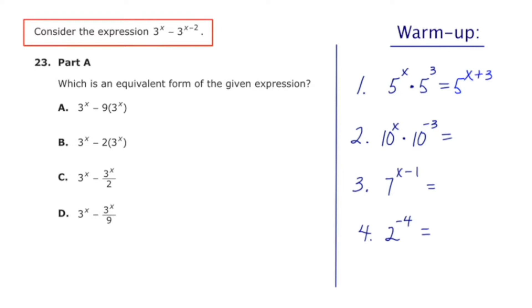Let's practice another one. And number two, we're supposed to multiply 10 to the x times 10 to the negative third. Once again, we're multiplying powers of the same base. So we're going to retain the base and add the exponents. The sum of x and negative 3 is just x minus 3.